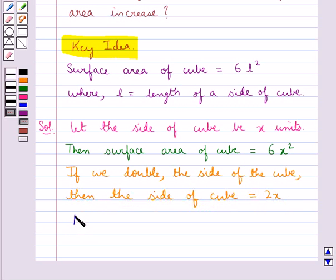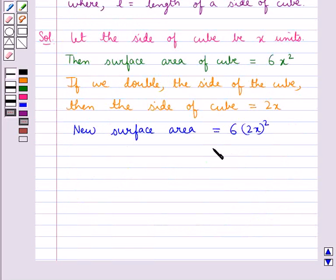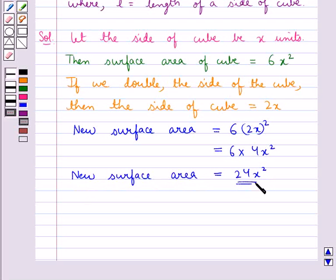Now the new surface area would be equal to 6(2X) whole square. This is equal to 6 multiplied by 4X square, which is equal to 24X square. Thus we get the new surface area is equal to 24X square.